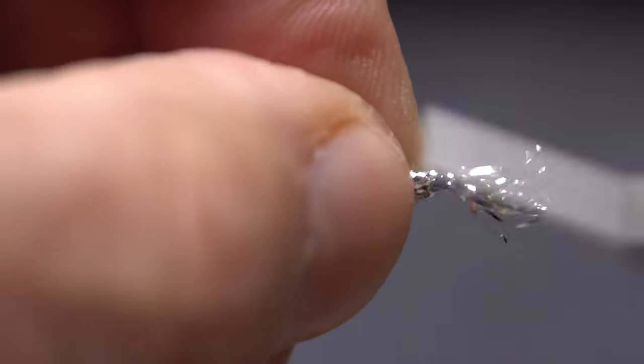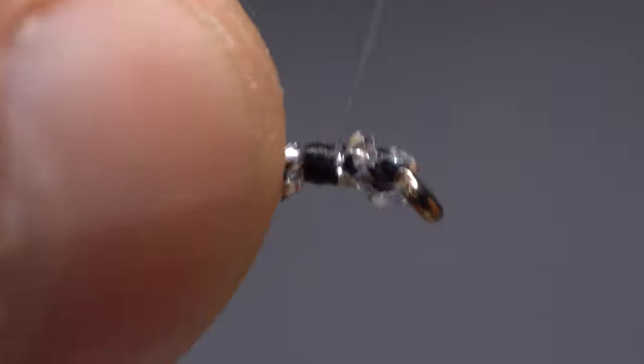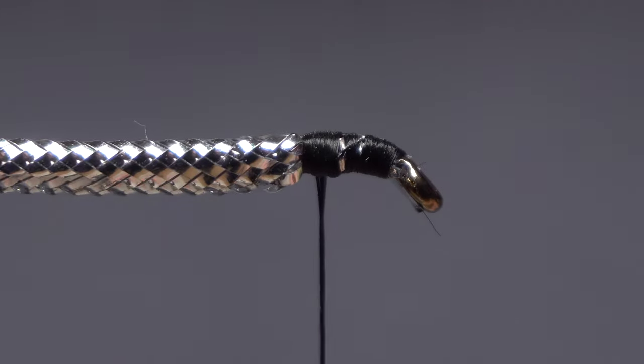Push the tubing forward and anchor it with tight wraps of tying thread. Again, some fiddly trimming is needed here as well. Take some thread wraps to clean up the area and you're ready to tie in the other materials needed to complete the fly.